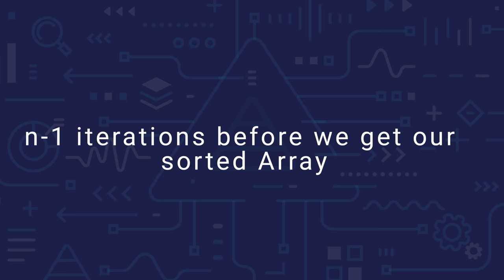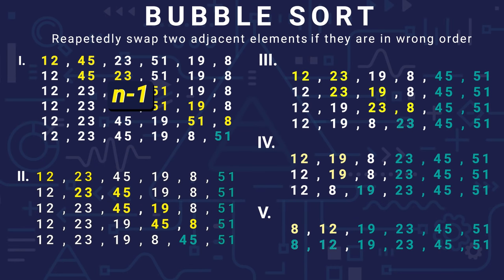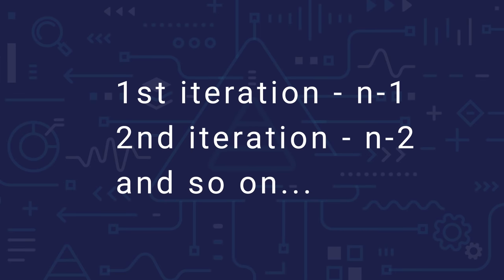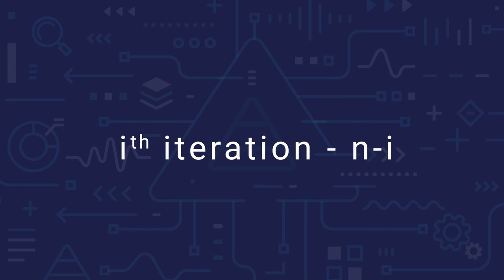The second thing to notice is that within each iteration we only check adjacent elements in the unsorted portion. In the first iteration we check n-1 comparisons, in the second iteration n-2, in the third n-3, in the fourth n-4, and in the fifth n-5. So in general for iteration i, we check n-i comparisons. These are the two key things to keep in mind when coding.